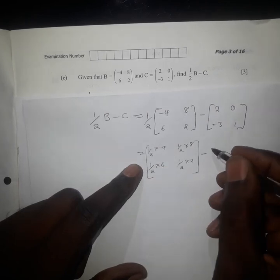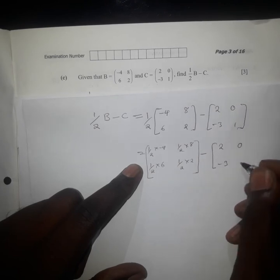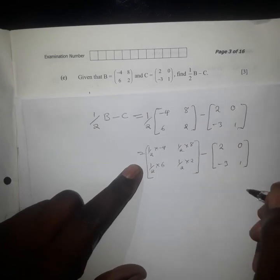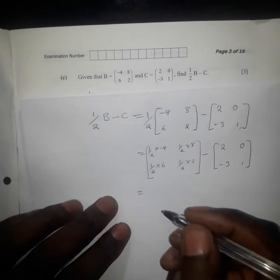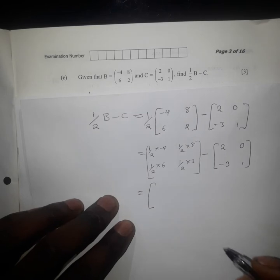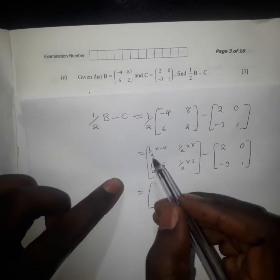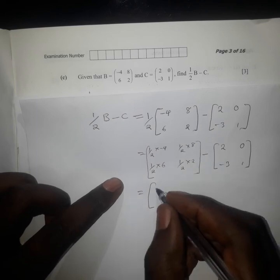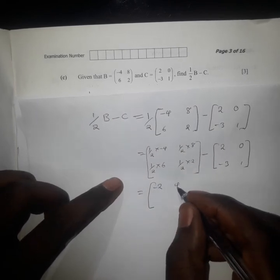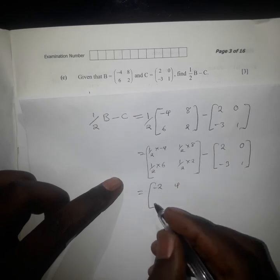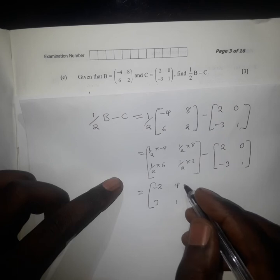Then from here we subtract matrix C with elements 2, 0, negative 3, 1. Performing the scalar multiplication: one half times negative 4 gives negative 2, one half times 8 gives positive 4, one half times 6 gives 3, and one half times 2 gives 1.